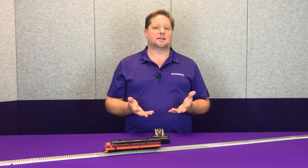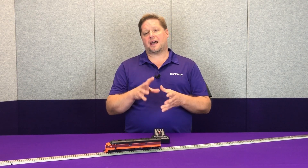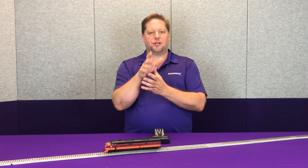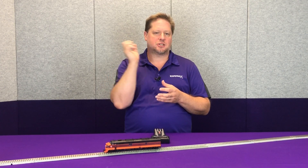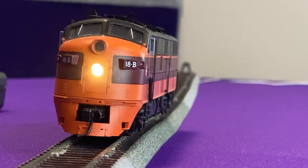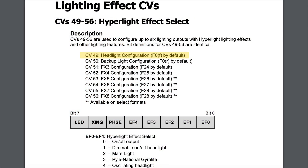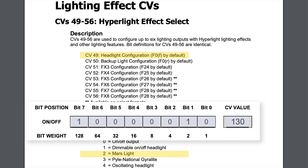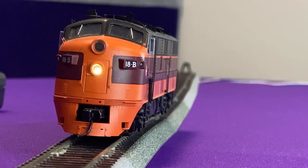Now let's look at a Mars light. A Mars light has a flashing reflector behind the light bulb in a figure-8 pattern, which creates that high flash, then low flash pattern. We're going to take our headlight and turn it into a Mars light by changing CV 49 — which is our headlight output effect register — and set that to a value of 130, which is 2 for our Mars light plus 128 since this model uses LEDs. Now you can see that nice Mars light pattern.